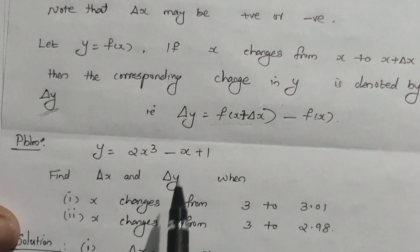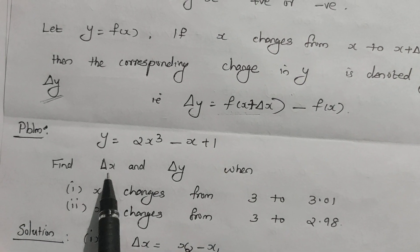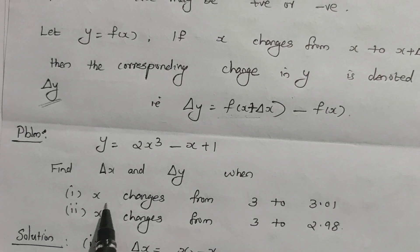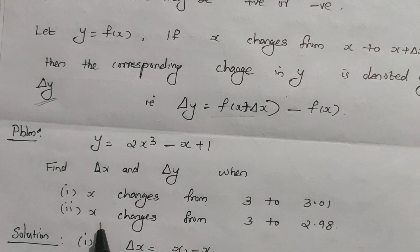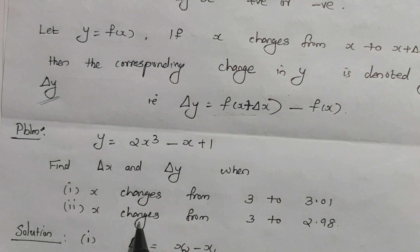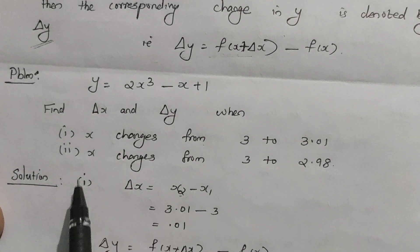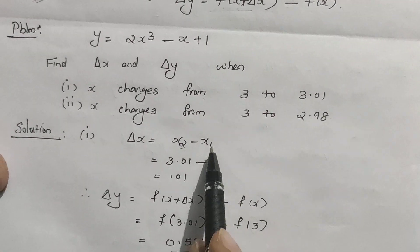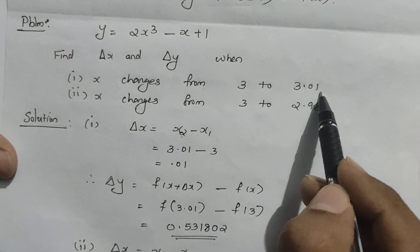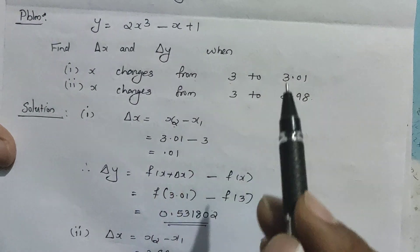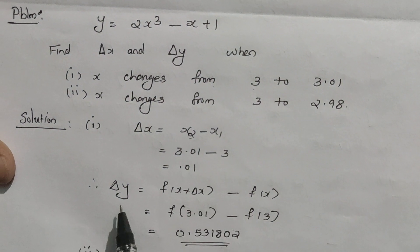Problem: y equal to 2X cubed minus X plus 1. Find delta X and delta Y when X changes from 3 to 3.01. In the first case, delta X equals X2 minus X1. Here X2 equals 3.01 and X1 is 3, so delta X equals 3.01 minus 3, which equals 0.01.